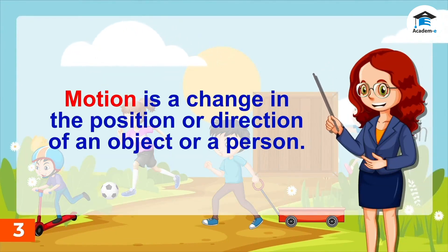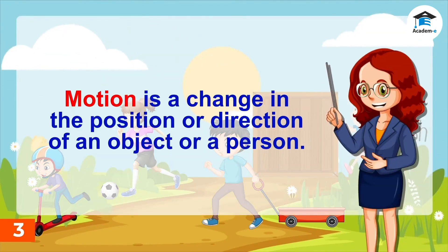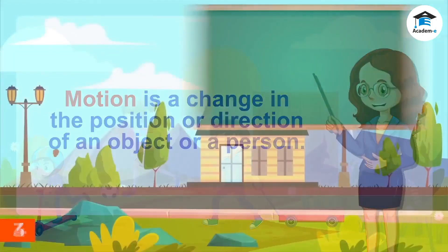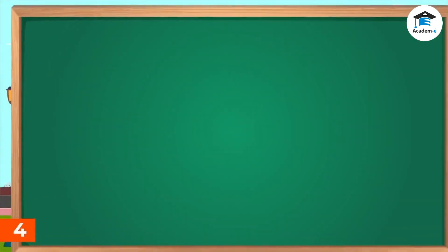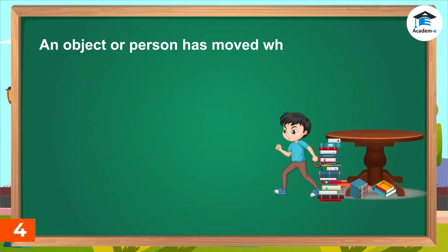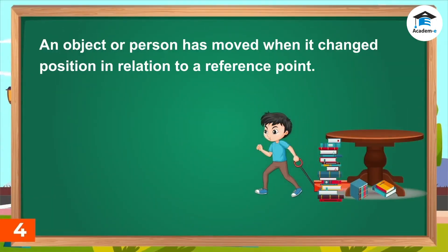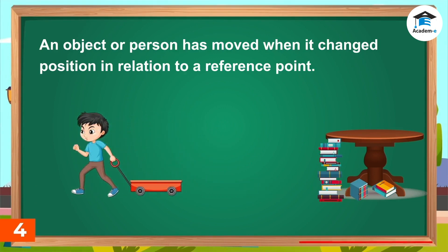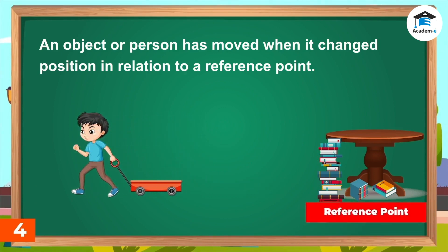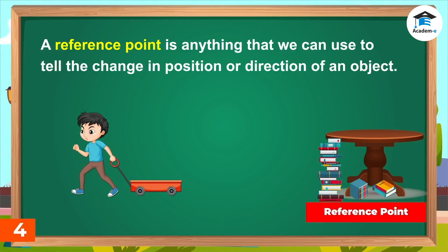Motion is a change in the position or direction of an object or a person. We can say that an object or person has moved when it changed position in relation to a reference point. A reference point is anything that we can use to tell the change in position or direction of an object.